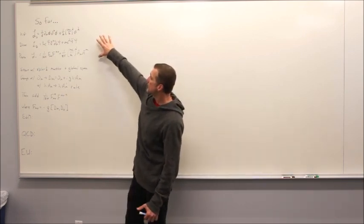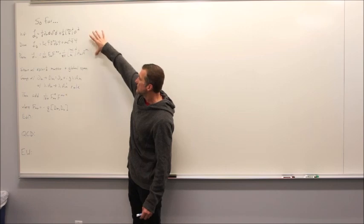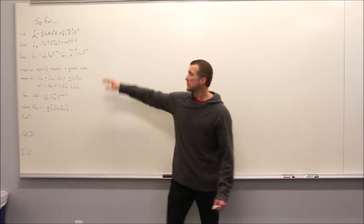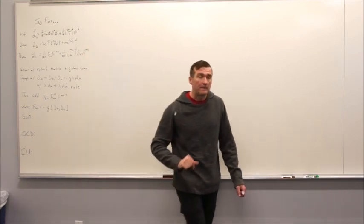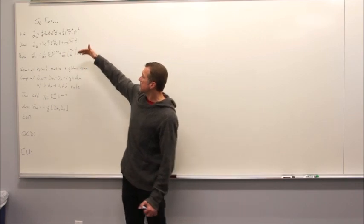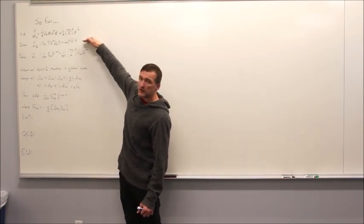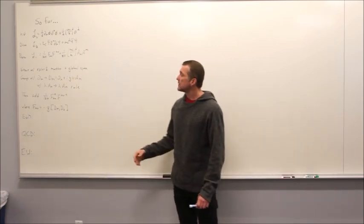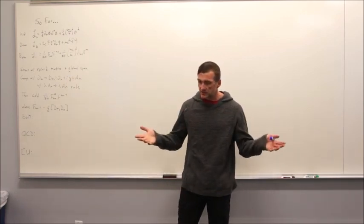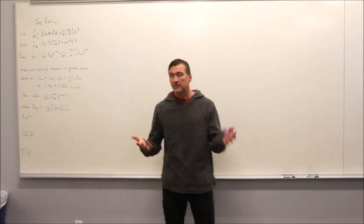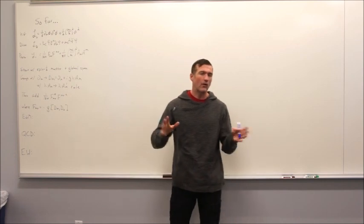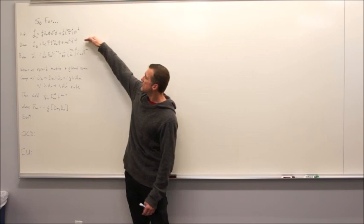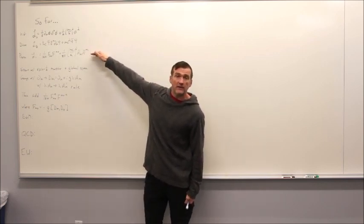We've essentially said we've got three types of spin fields that we'll consider: spin zero fields, spin a half, and spin one. The observation is that all matter is a spin-half field. So all the things we're made of — electrons, quarks, which make up the protons and neutrons — but there are more exotic things like neutrinos and tauons and so forth. Those are all spin-half fields.